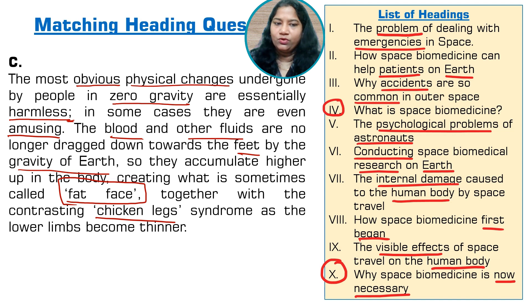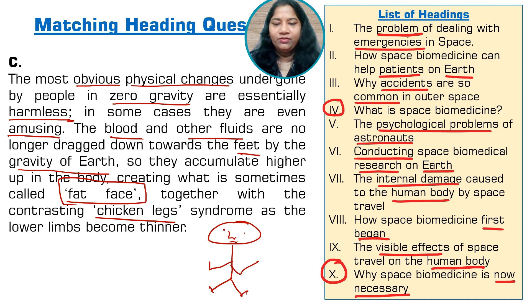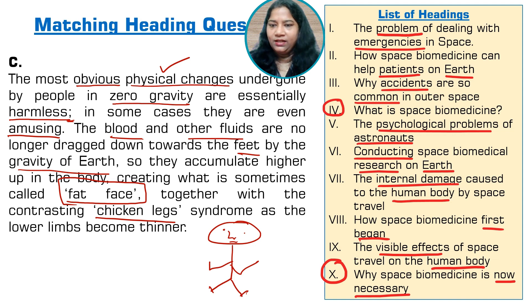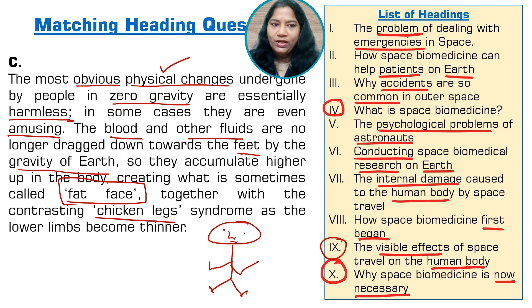In zero gravity, blood and fluids don't come down, so people show a fat face with thin legs — like a stick figure with a big face and thin body. The keyword in the first sentence is 'physical changes' — changes happening to our face or body. Looking at the headings, 'the visible effects of space travel on the human body' is a clear match: fat face and chicken leg syndrome are effects you can see. So paragraph C gets heading nine — 'Visible effects of space travel on the human body.'